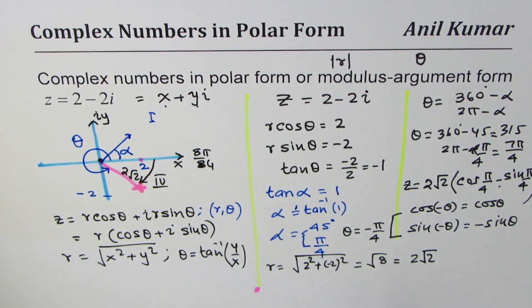But I would like you to think why I wrote answer as 2 square root 2 cos pi by 4 minus sin pi by 4, since in multiple choice questions that could be your option.